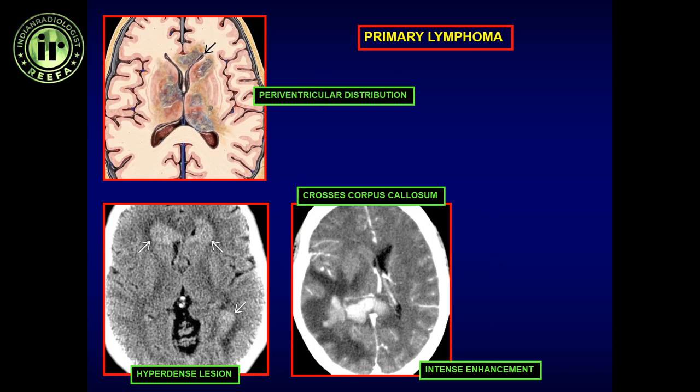Here are a few imaging examples. On non-contrast CT, we see hyperdensity hugging the ventricular lining — when you see a lesion spreading along the ventricular lining, think of lymphoma. The second case is a post-contrast image showing an intensely enhancing mass lesion in the right parietal region, directly crossing over the midline along the posterior corpus callosum.